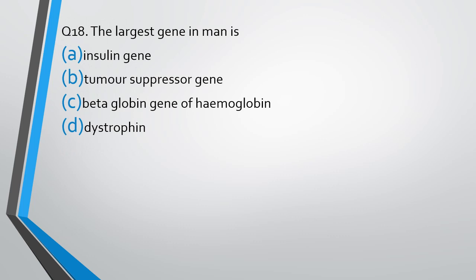Question number 18. The largest gene in man is: insulin, tumor suppressor gene, beta-globin gene of hemoglobin, or dystrophin? Largest gene in man is - the correct answer is Option D, dystrophin.